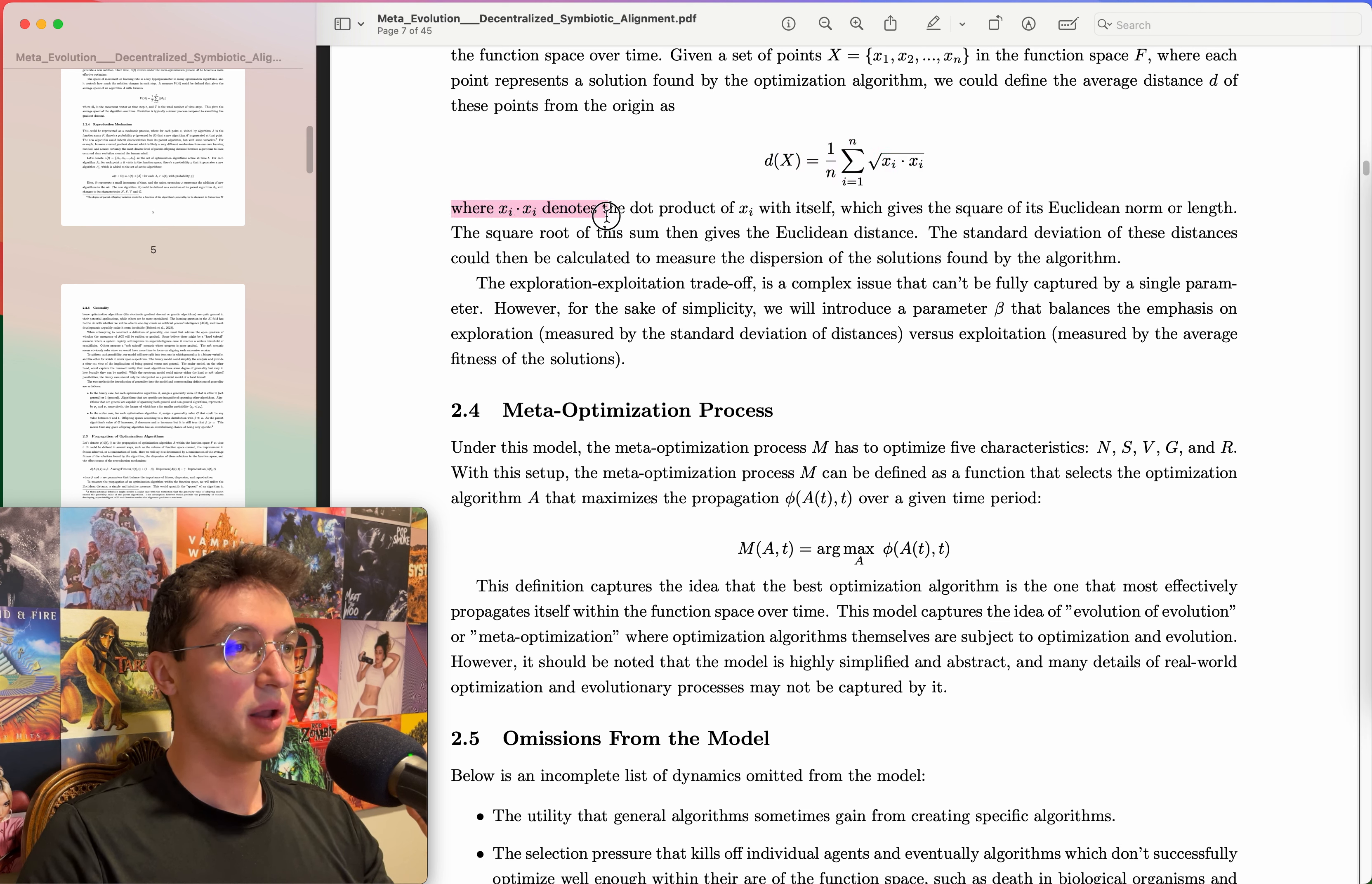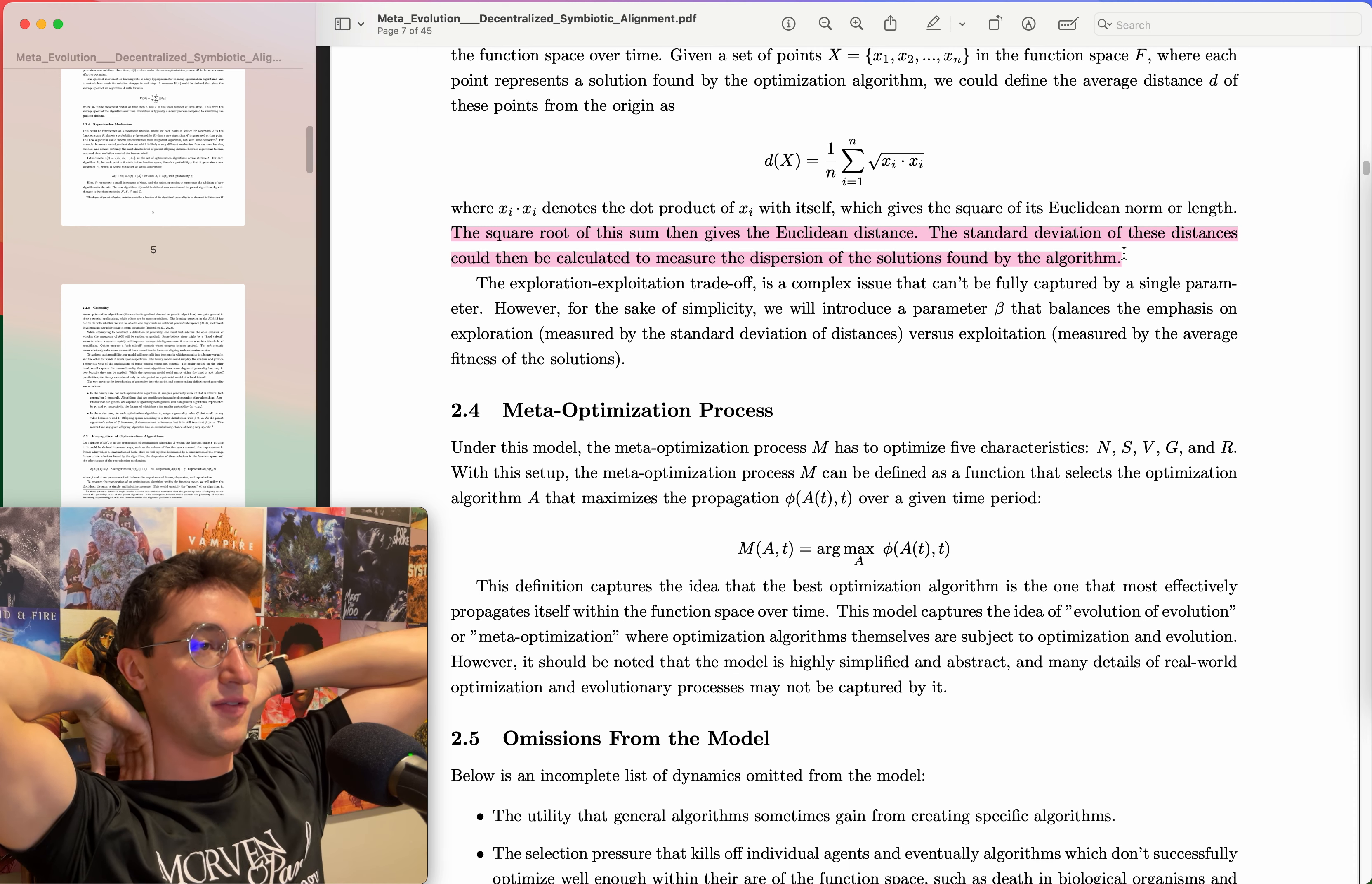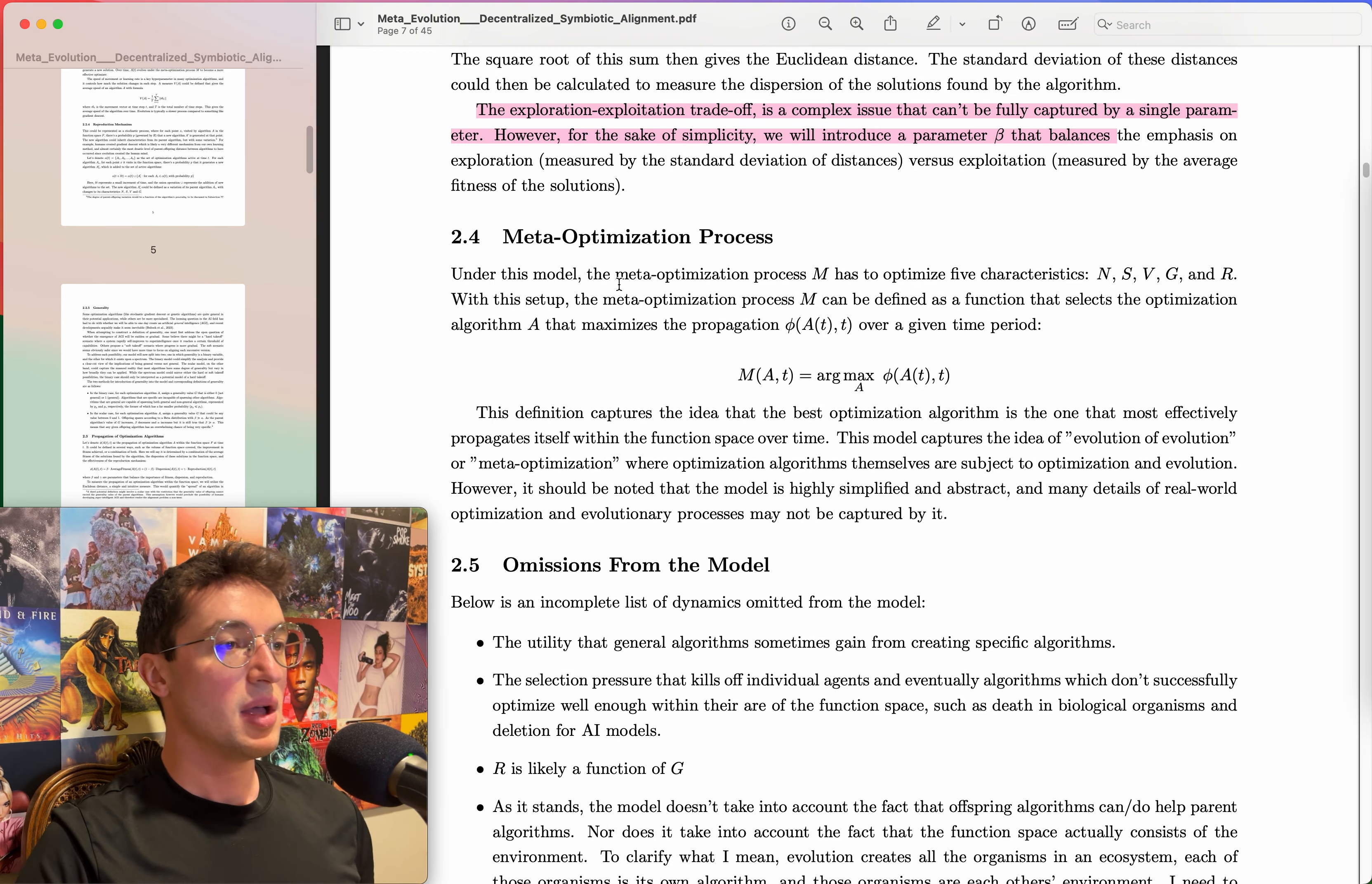Given a set of points x_1, x_2, etc. in the function space F, where each point represents a solution found by the optimization algorithm, we could define the average distance of these points from the origin using Euclidean distance. Where x_i dot x_i denotes the dot product of x_i with itself, which gives the square of its Euclidean norm or length. The square root of the sum then gives the Euclidean distance. The standard deviation of these distances could then be calculated to measure the dispersion of the solutions found by the algorithm. So to be clear, all this math should be making no sense, it really shouldn't be. It's so haphazard and random and like pieced by ChatGPT and stuff. If I were to put a lot of work into this I can make it actually make some sense, but I think there are, I've so far spotted multiple flaws in how I'm constructing all this, so don't be surprised if it's kind of wacky.